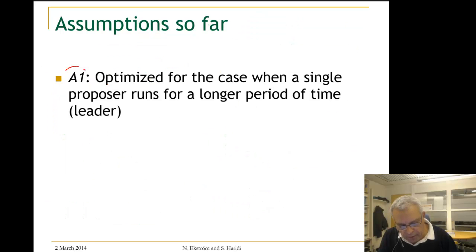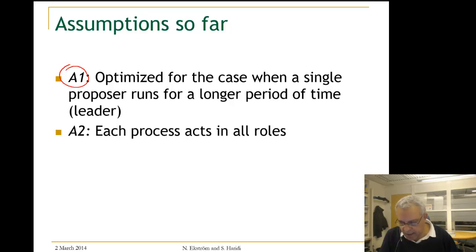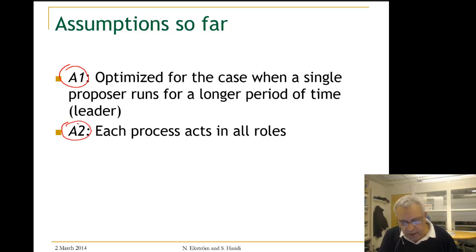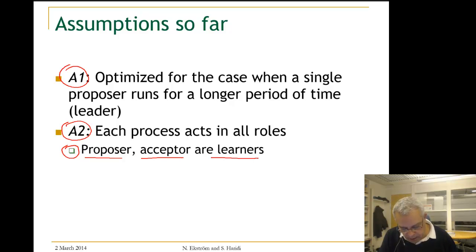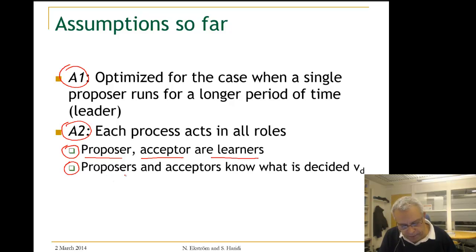So far we have optimized the case when a single proposer runs for a longer period of time, and now we will add an assumption. This assumption will help us do the optimizations just mentioned. The assumption is that each process acts in all roles — it will act as a proposer, as an acceptor, and as a learner. In particular, an acceptor will know what is decided; it will know B_D.